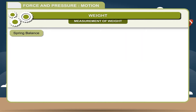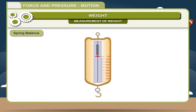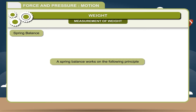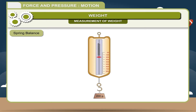A spring balance is an instrument used to measure the weight of a body. A pointer and a long rod ending in a hook is attached to its lower end. The spring is enclosed in a metallic case so that the pointer moves on a scale fixed to it and the hook hangs out below the load. At the top of the case, a metallic hook is attached to hang the balance.